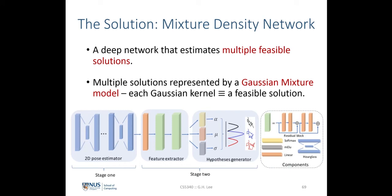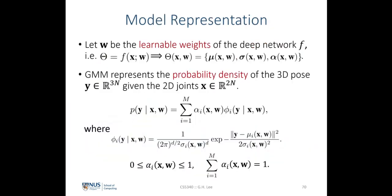We propose the mixture density network to alleviate this problem. Our MDN estimates multiple solutions to better model the ill-posed problem, with each solution represented by a Gaussian mixture kernel. We adopt the two-stage approach: stage one is a standard 2D pose estimator taking an image and outputting a 2D pose, and our contribution is stage two, which takes 2D poses and outputs multiple solutions using the mixture density network.